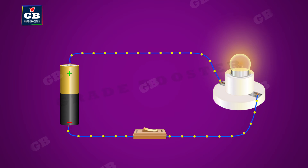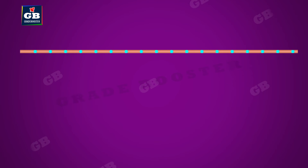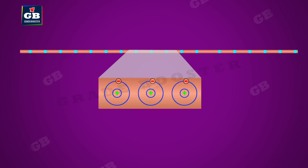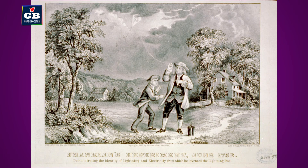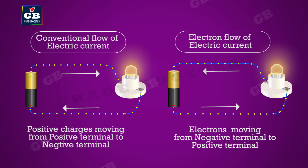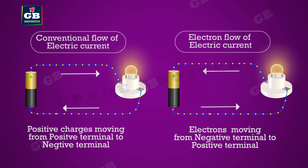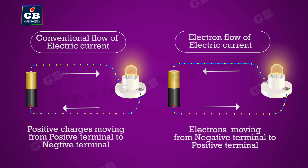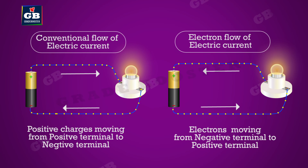If the circuit is broken by turning the switch off, the current stops flowing and the bulb does not glow. In circuits using metallic wires, electrons constitute the flow of charges. However, electrons were not known at the time when the phenomenon of electricity was first observed, so electric current was considered to be the flow of positive charges, and the direction of flow of positive charges was taken to be the direction of electric current. Conventionally, in an electric circuit, the direction of electric current is taken as opposite to the direction of the flow of electrons, which are negative charges.